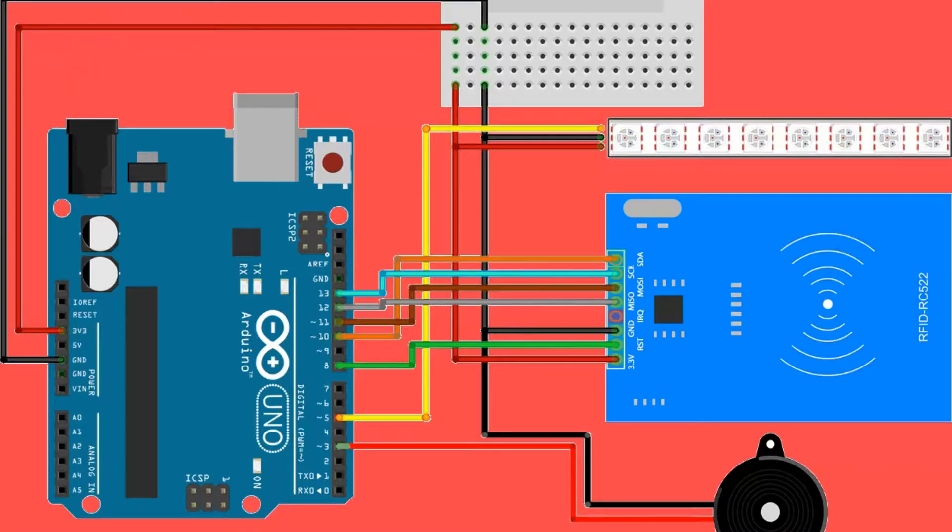Ground is connected to ground of Arduino. 3.3 volts input is connected to 3.3 volts of Arduino. External buzzer is connected to pin 3 of Arduino. LED is connected to pin 5 of Arduino.